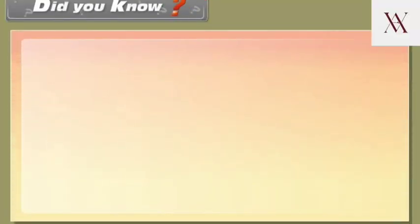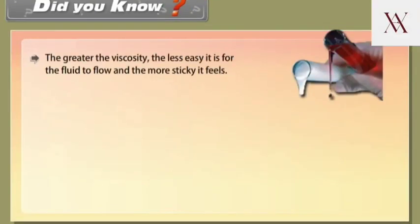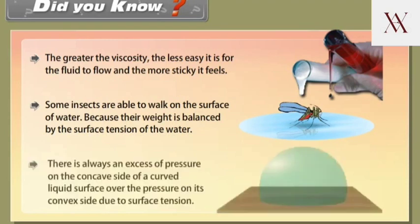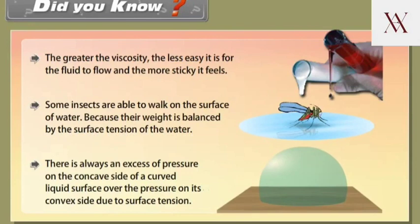Did you know? The greater the viscosity, the less easy it is for the fluid to flow and the more sticky it feels. Some insects are able to walk on the surface of water because their weight is balanced by the surface tension of the water. There is always an excess of pressure on the concave side of a curved liquid surface over the pressure on its convex side due to surface tension.